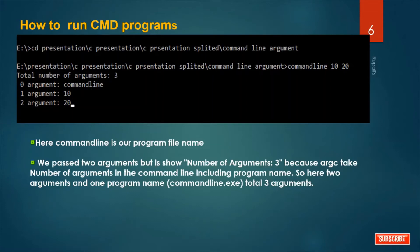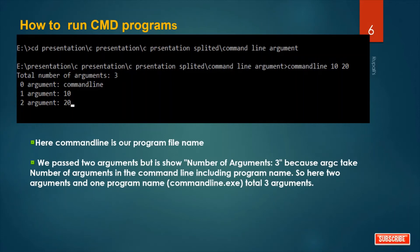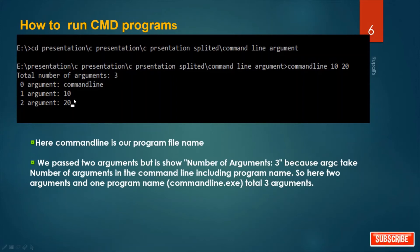In this way, command line arguments work. Let's revise. To run cmd programs: first, go to the directory where you saved your C file. Then write the program name followed by the required input values you want to pass to main. My program name is 'command line'. We passed two arguments, but argc shows three — because argc counts arguments including the program name. So: command line dot exe is one, plus two arguments equals three total.